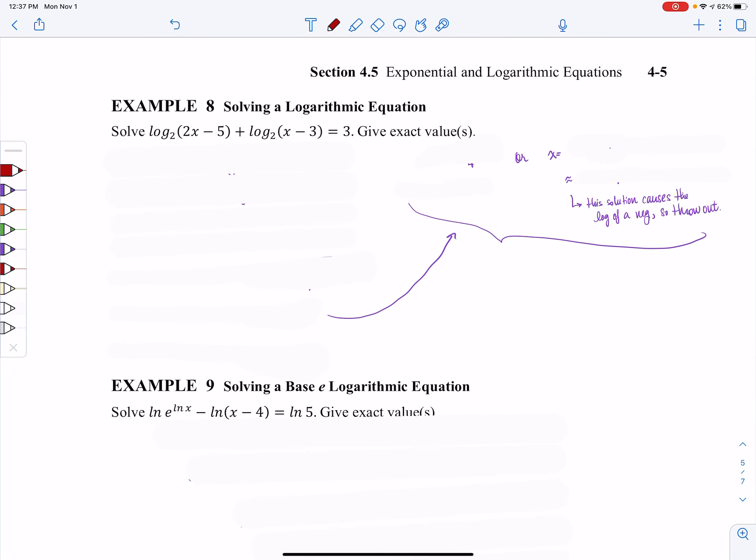Now once again, here I don't have log equals log. So once again, I need to condense my logs. So I'll use the product rule on the left side. And I'll go ahead and multiply those two binomials together. And I think I erased a little bit too much. And then I can, this is actually tip number 2 in the big gray box.